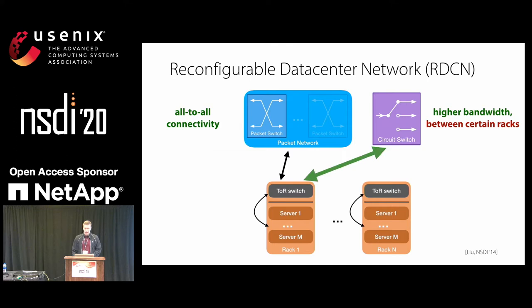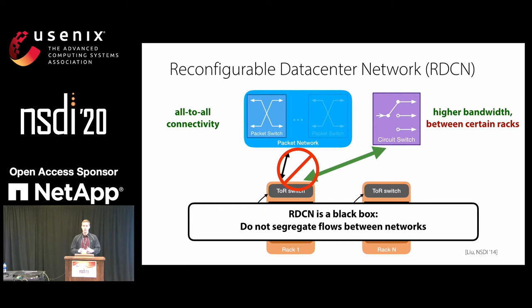Some other designs have considered connecting the top-of-rack switch to both networks simultaneously or only using a circuit network. But in this case, we assume that the reconfigurable data center network is a black box and we don't do any flow segregation between the two networks. All flows will go over either the packet network or the circuit network.